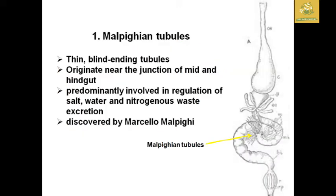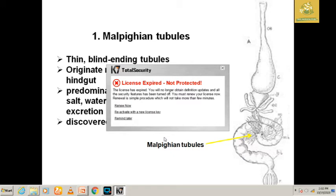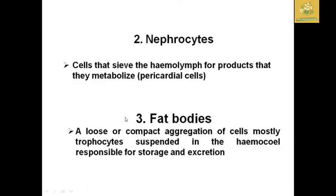The first organ is the Malpighian tubules. These are thin, blindly ending tubules that originate near the junction of the midgut and hindgut. They are predominantly involved in the regulation of salt and water as well as the excretion of nitrogenous waste from the body. They were first discovered in insects by Marcello Malpighi, and because of his work these tubules are named Malpighian tubules.